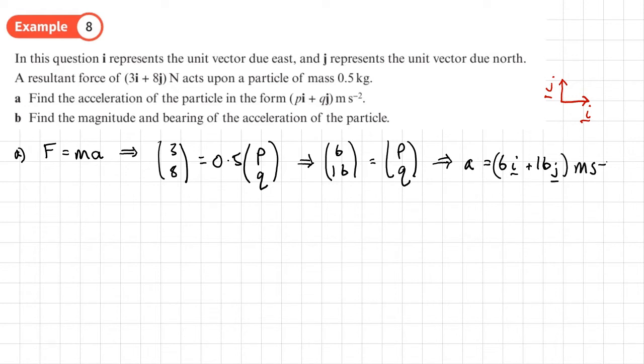Part b: We want the magnitude and the bearing of the acceleration of the particle. So we want some sort of diagram to help us out. If we put the origin here and again draw our i and j unit vectors like this.